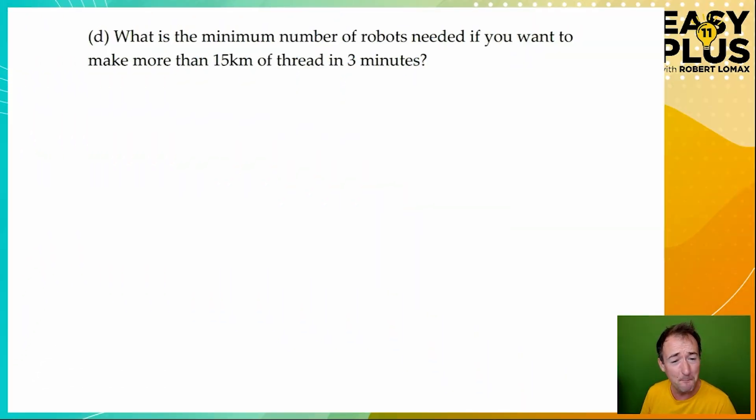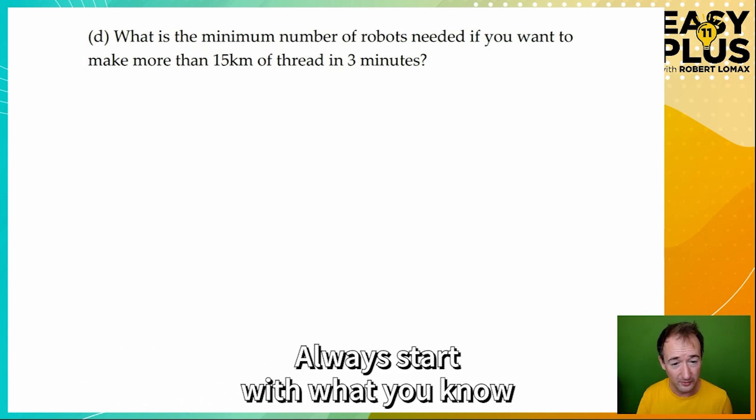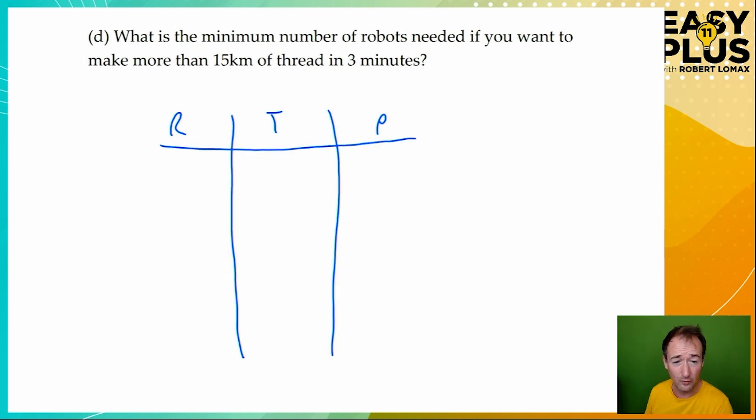And whether you're multiplying together or dividing together or whether one column needs to multiply while another column divides. Now this has got really fiddly wording. What is the minimum number of robots needed if you want to make more than 15 kilometers of thread in three minutes? There's a lot there to confuse you, but I would start off in the same way and let's see what we can do trying to find an answer for 15 kilometers in three minutes. Let's see what comes out at the end of that process. Once again, we've got a choice of which set of numbers we start with. And again, you could start with any numbers and you would get to the right answer in the end. However, once again, I like the starting numbers, which are 4, 12 and 30.